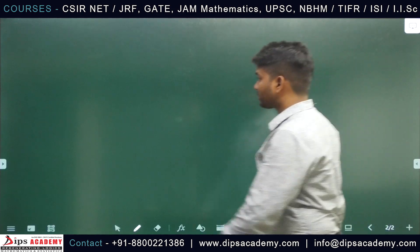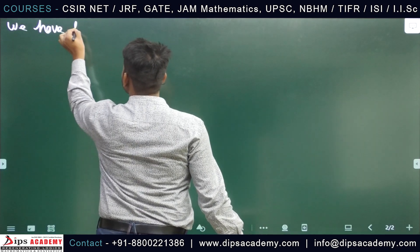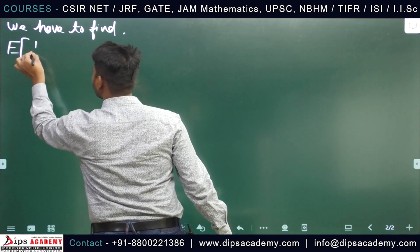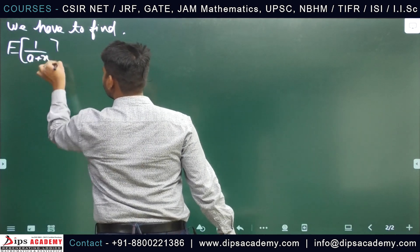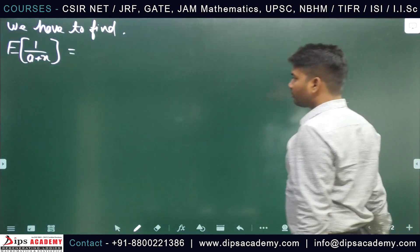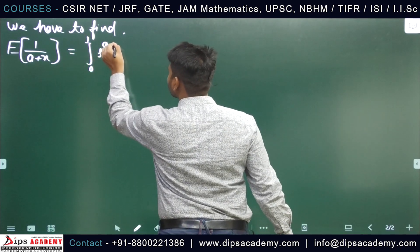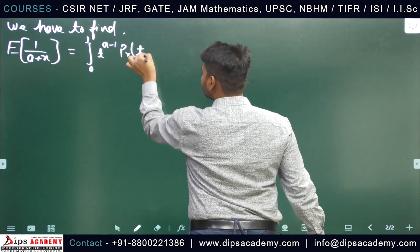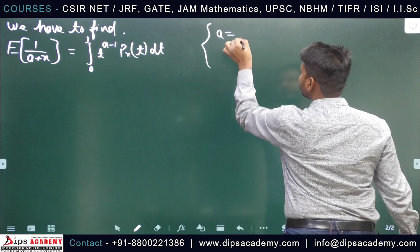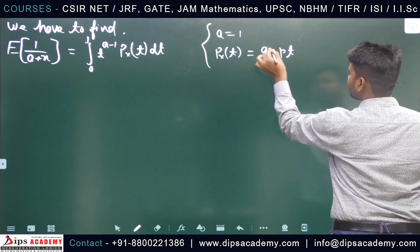We have to find expectation of 1/(a+X). From the formula we get the integral from 0 to 1 of t^(a-1) times P_X(t) dt, where a equals 1 and P_X(t) equals (q + pt)^n.